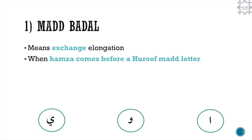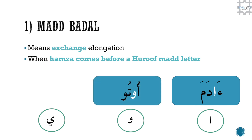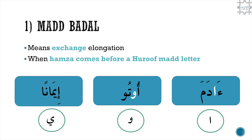The first branch, mad badal, means exchange elongation. It occurs when a hamza comes before a huruf mad letter. For example: Adam, utu, imanan.